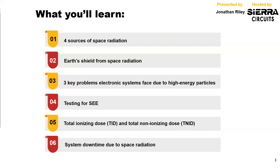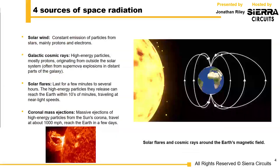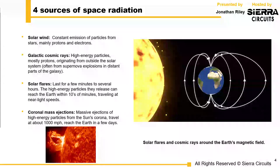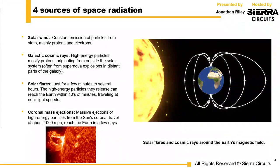So, let's have a look at the natural sources of space radiation. It comes down to four things. The solar wind. The solar wind is a constant emission of particles, specifically from our sun. It comprises mostly of protons and electrons, although, as we shall see, there are many other things in it as well.